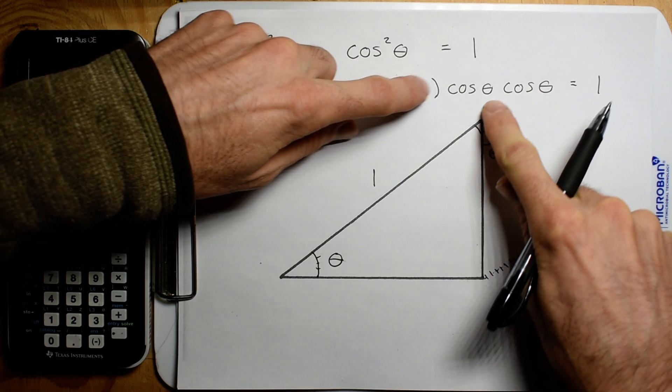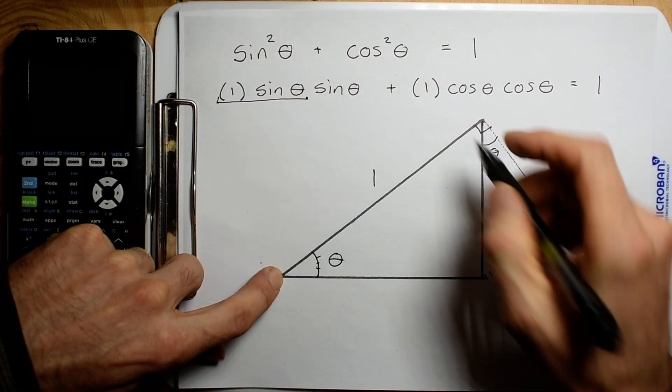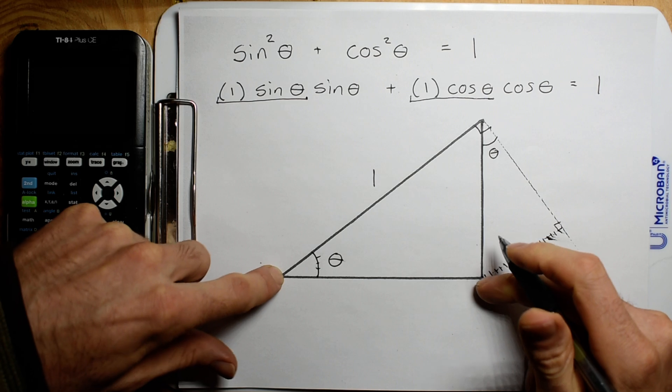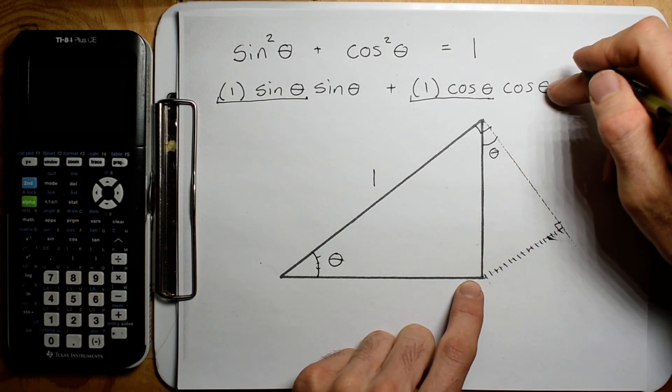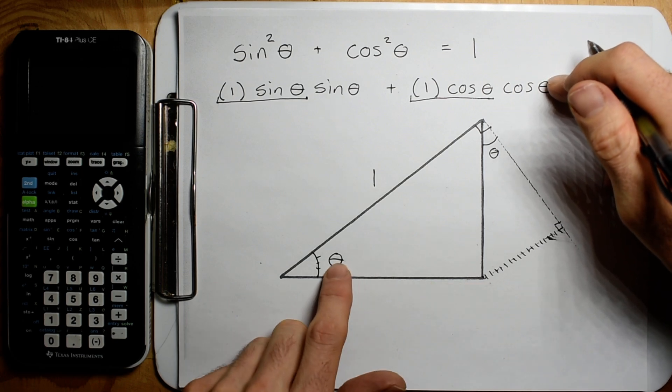Now we're going to turn this into a hypotenuse and we're going to take the cosine of this angle. So we're going to drop this down.